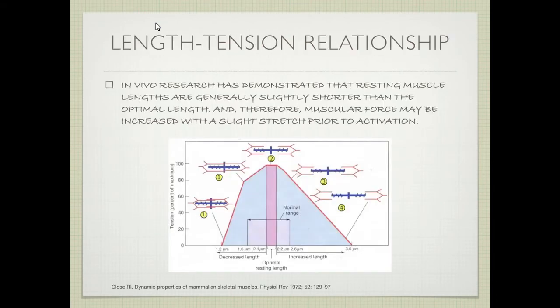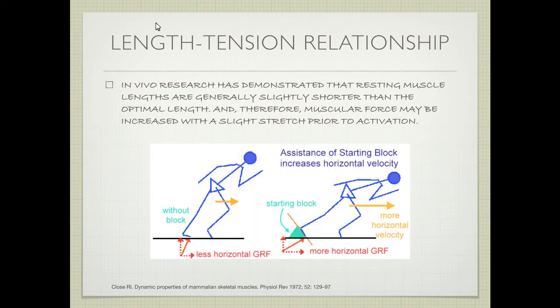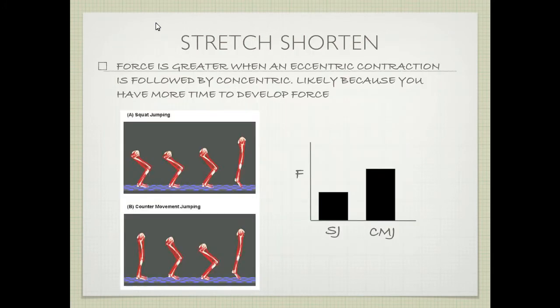Research demonstrates that resting muscle lengths are generally slightly shorter than the optimal length. Therefore, muscular force may be increased with a slight stretch prior to activation. The classic example comes from the starting block — having that pre-stretch contributes to greater horizontal velocity.